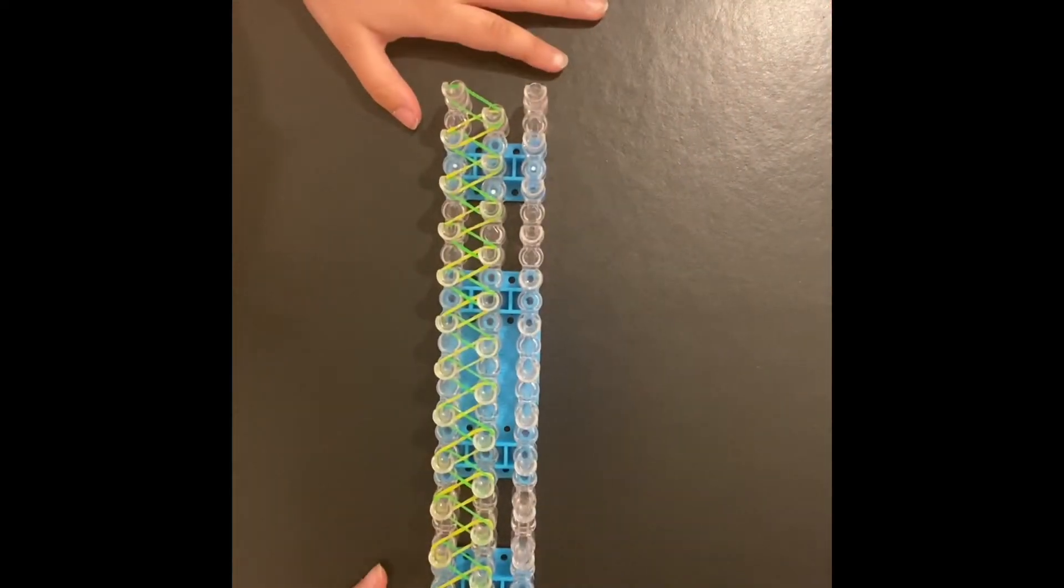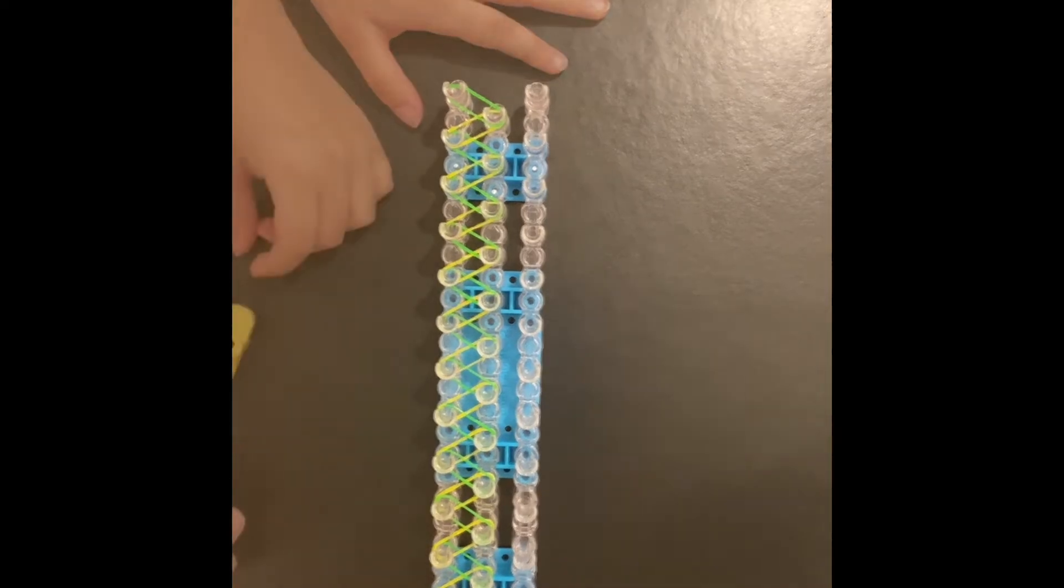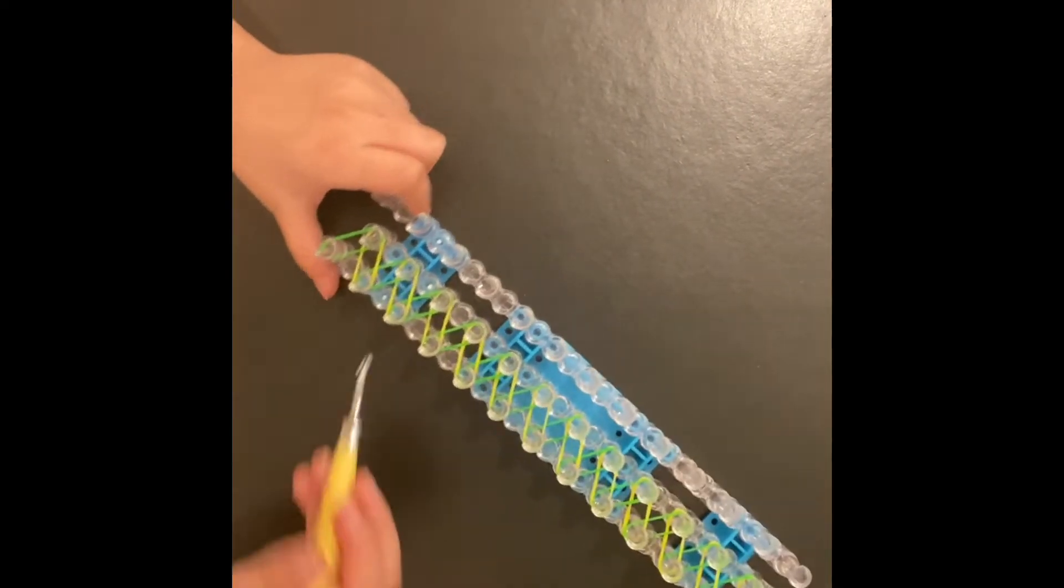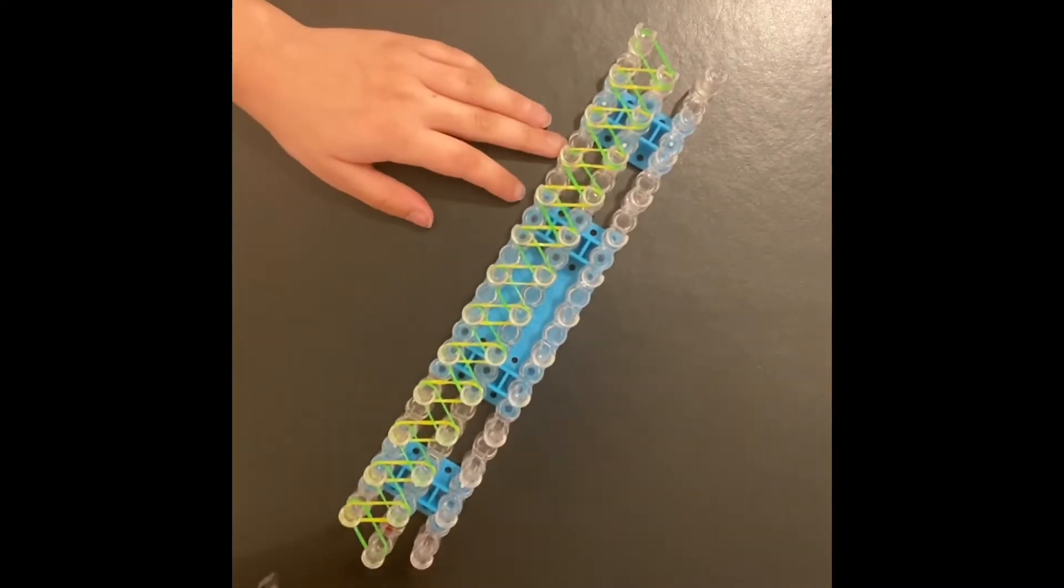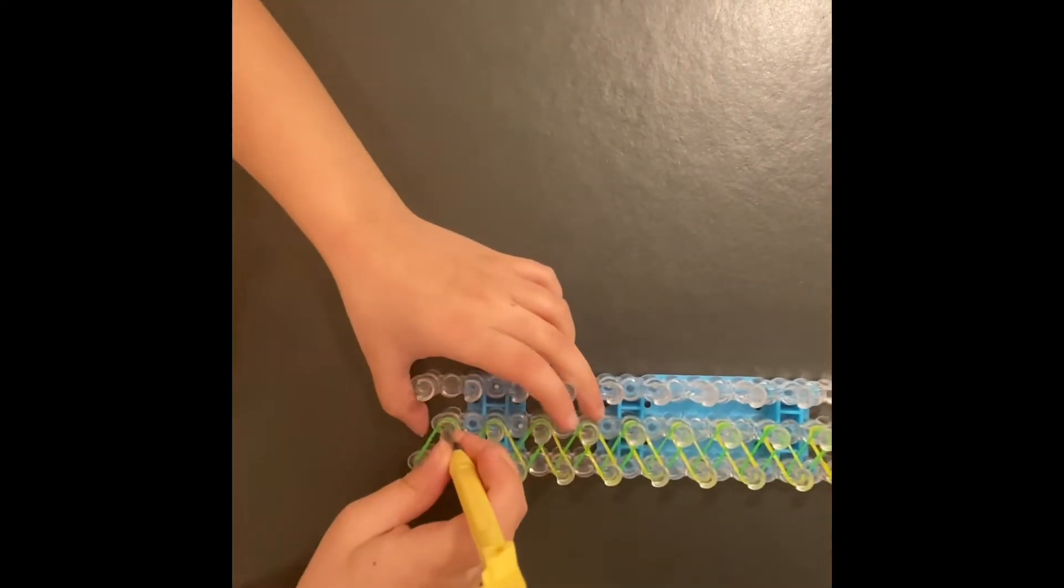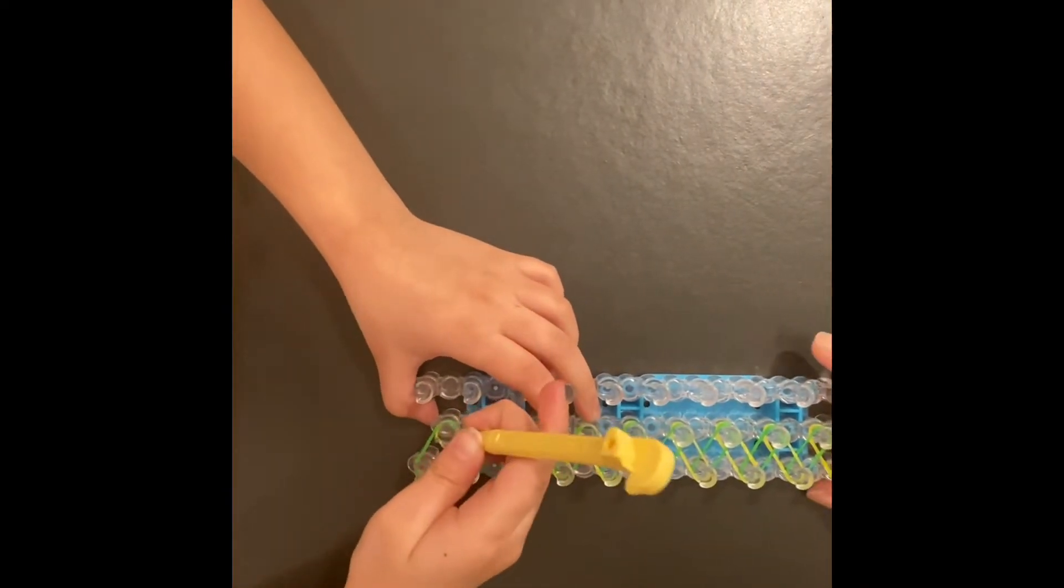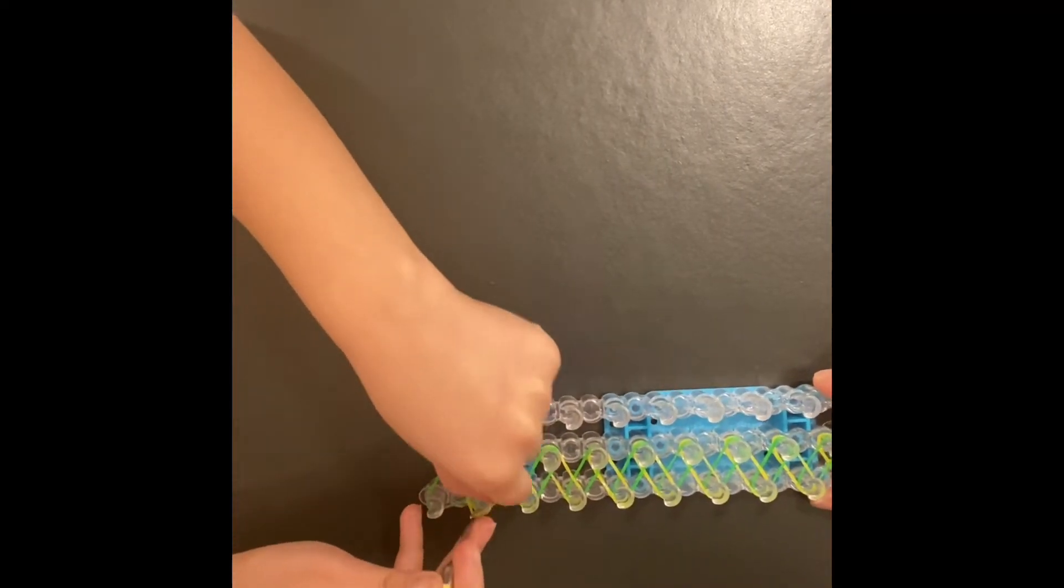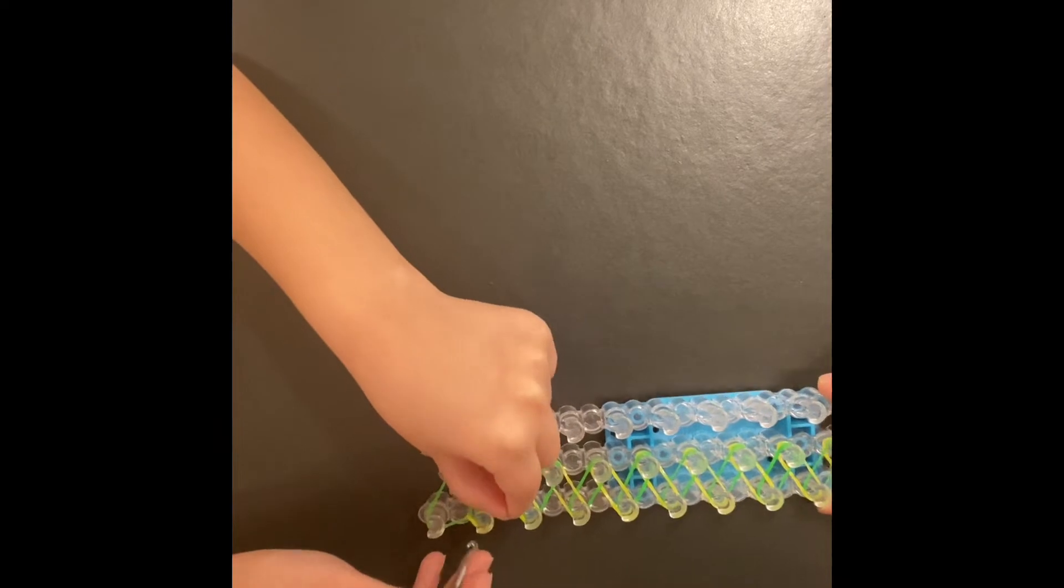When you're done, it should look like this. You'll need a hook and you have to start from the end instead of the arrow pointing upwards. The hook has to go inside of here, and then pull that over to the next one like this.